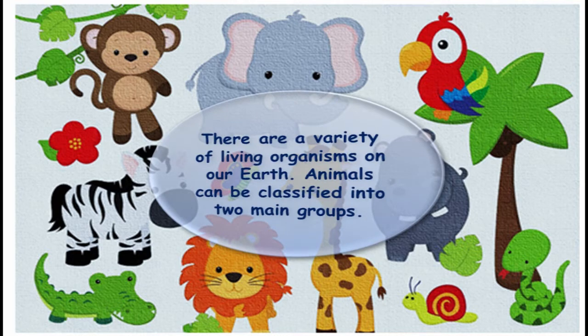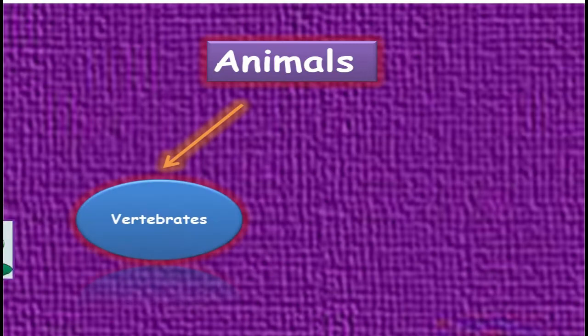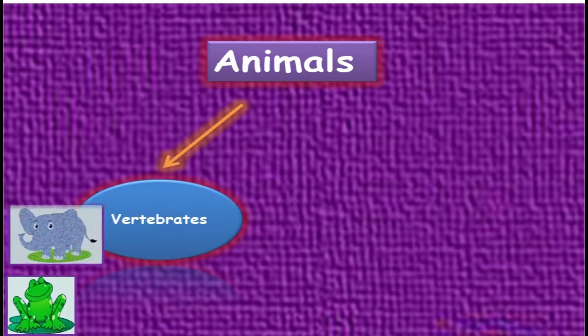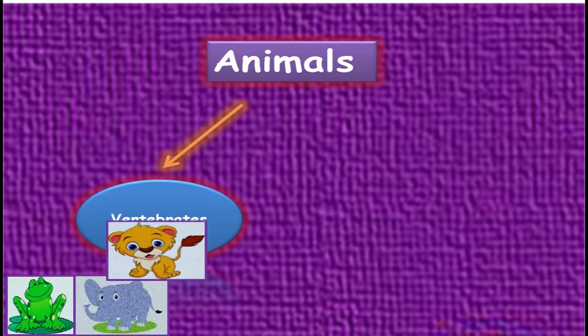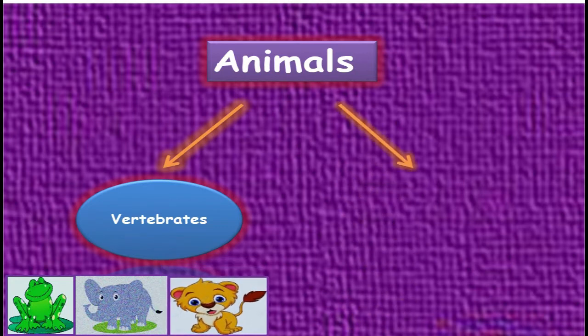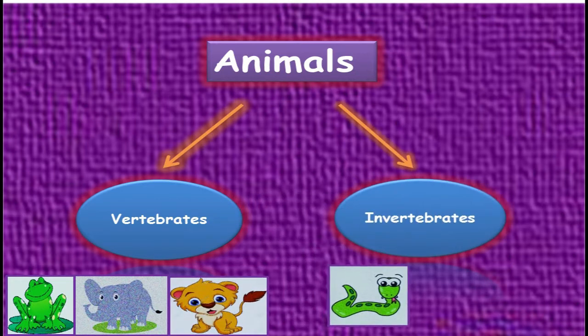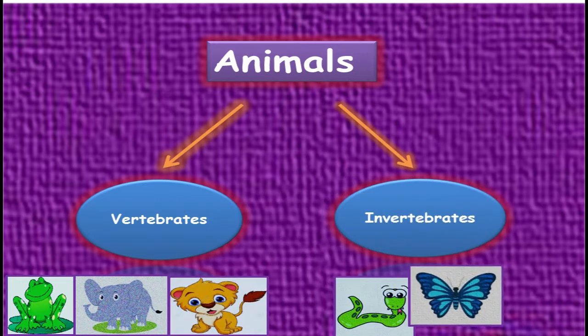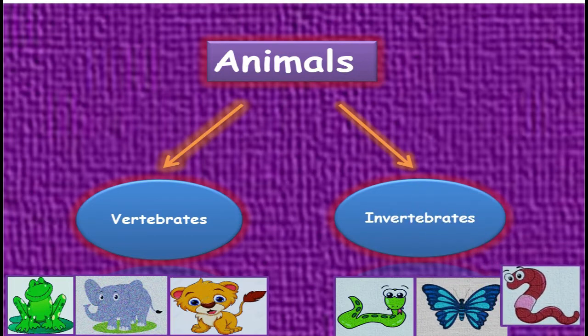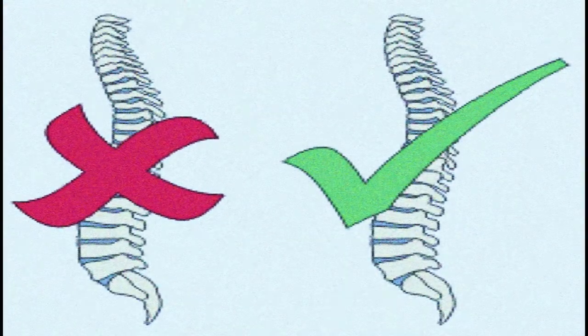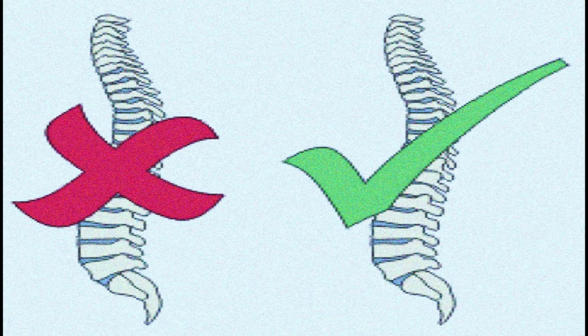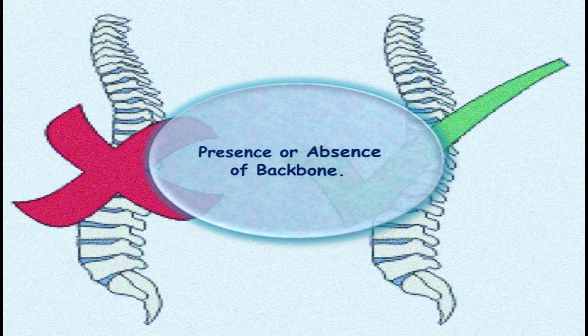The first group is known as vertebrates, while the second group is named invertebrates. Whether an animal is a vertebrate or invertebrate depends largely on the presence or absence of a backbone. Vertebrates are animals that have a backbone or spinal cord.